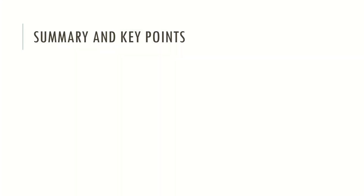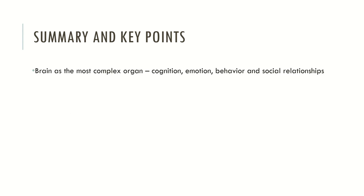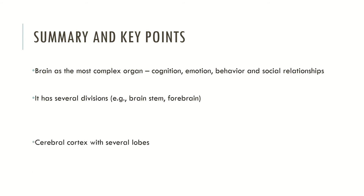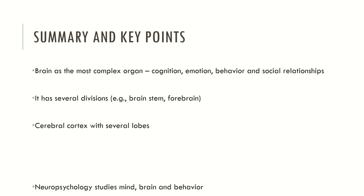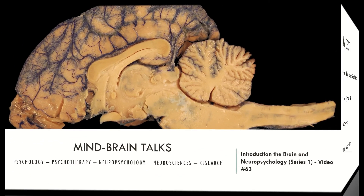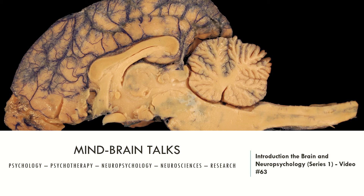So now let's take a brief summary. The brain is defined as the most complex organ because it is the organ that allows humans to have cognition, emotion, behavior and social relationships. It has several divisions — as we saw, the brainstem, the forebrain — and the cerebral cortex has several lobes. We also saw that neuropsychology is the scientific discipline that studies mind, brain and behavior. Why are we so fascinated by this organ? The brain is the organ of the mind. It's because we have a functional brain that we can dream, that we can think, that we can fantasize and reflect upon the wonders of life. The brain is the organ that allows all humans to have higher order abilities and mental processes such as imagination, thinking, fantasizing and emotions. The brain is the biological organ that allows us to take a step further in the animal hierarchy.